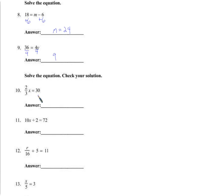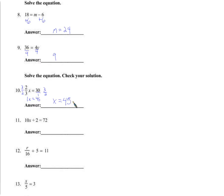Some of you divided by 2 thirds, some weren't sure what to do. I'm going to multiply both sides by 3 halves. If I put 3 halves here and multiply by 2 thirds, working left to right I get 6 over 6, which is 1. So 1 times x equals — on the other side, 30 times 3 is 90 divided by 2 is 45, or you can cancel the 2 with 30 to get 15 times 3 equals 45. So x is 45.